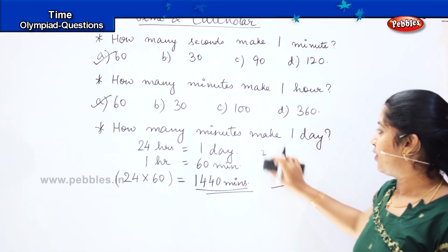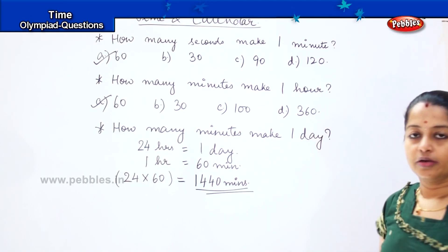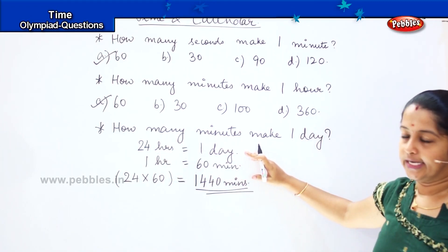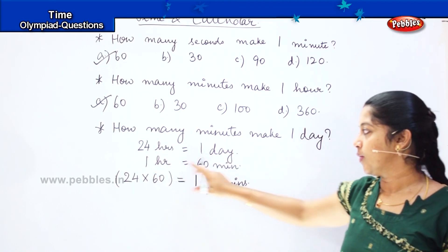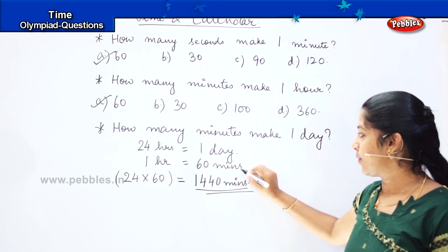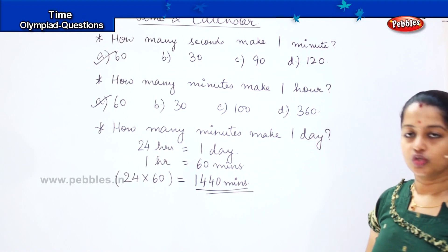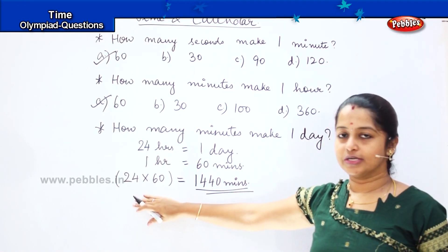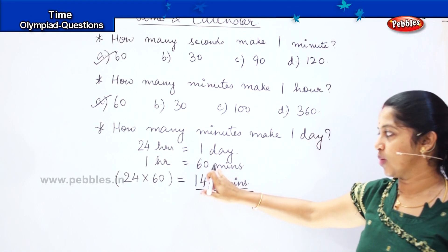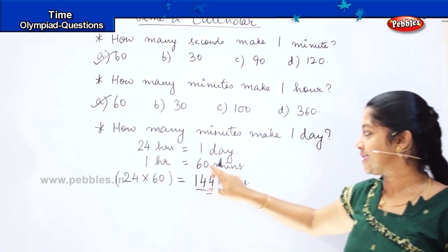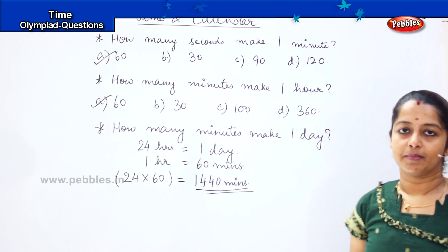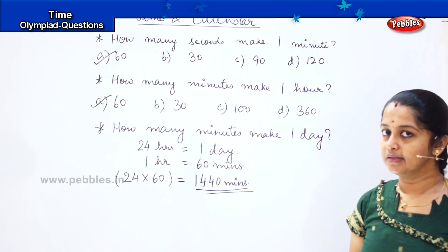Is it clear? How did you do it? 24 hours make one day, and 1 hour is equal to 60 minutes. So 24 hours will be 24 into 60, which is 1440 minutes.